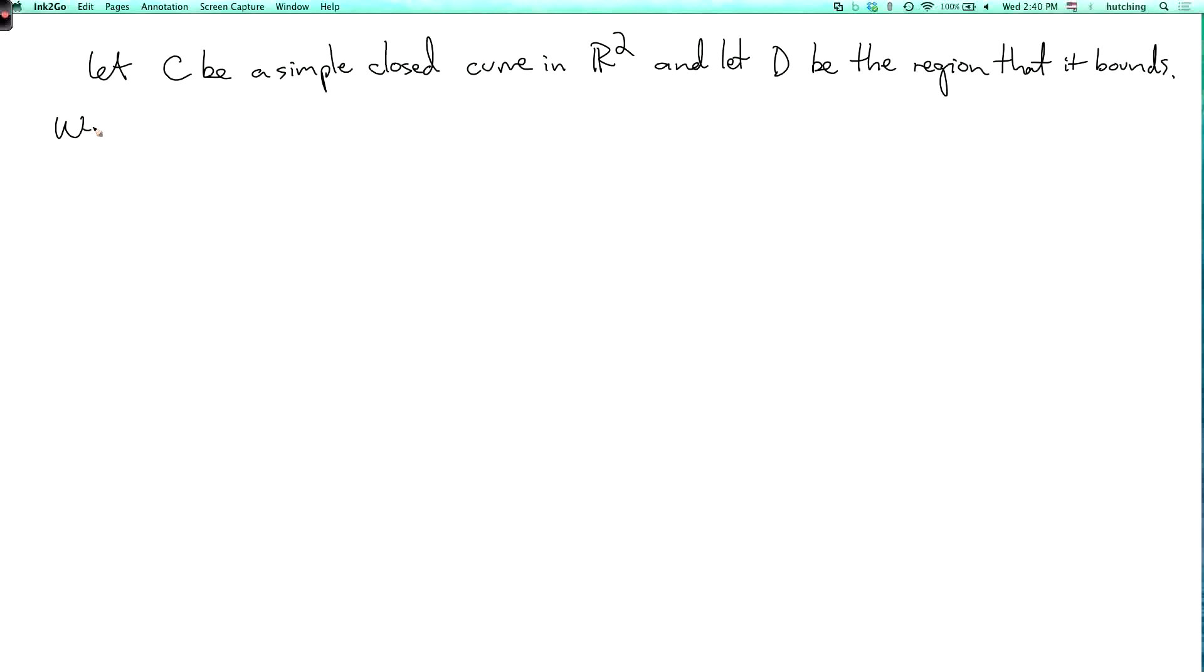We say that C is positively oriented. The informal idea is that D is to the left as you walk along C.